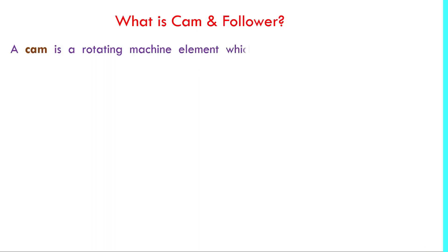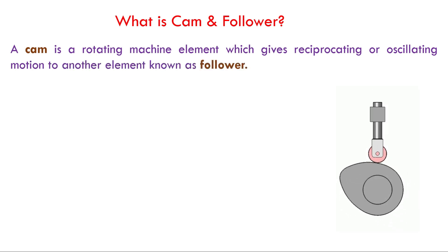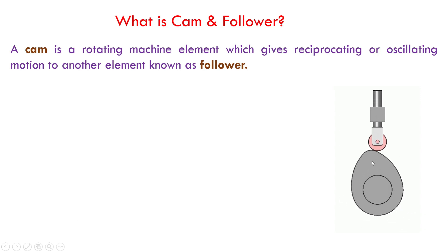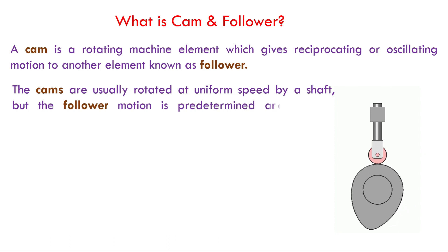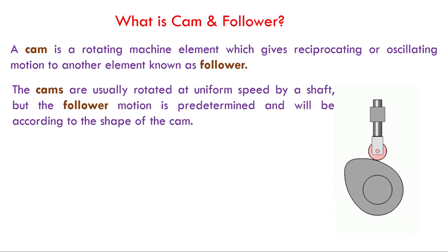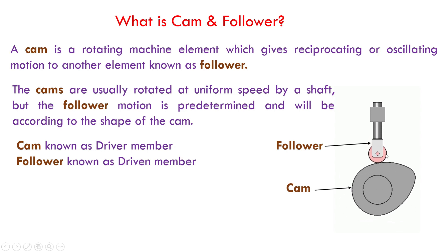First, what is cam and follower? A cam is a rotating machine element which gives reciprocating or oscillating motion to another element that is known as follower. Here you can see this is a cam and this is follower. The cams are usually rotated at uniform speed by a shaft, but the follower motion is predetermined and will be according to the shape of the cam. Here we can see that cam is driver member and follower is driven member.